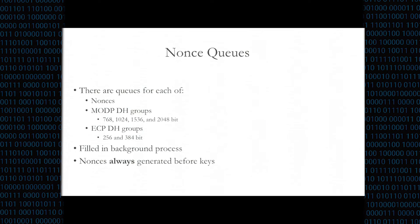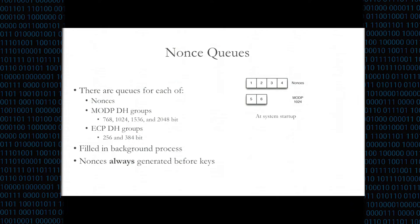However, in our reverse engineering we found that ScreenOS uses nonce queues. ScreenOS has a background process filling these queues — a queue for nonces and queues for each Diffie-Hellman group, both mod-p and elliptic curve — filled ahead of time, running once every second to pre-generate nonces and keys. Interestingly, the nonce queue is always filled before the key queues. This means that for any given pair of nonce and key at the head of the queue, the nonce will have been generated before the key, despite the IKE presentation order suggesting otherwise. After popping nonce and key off the queue and replenishing, this property is maintained.